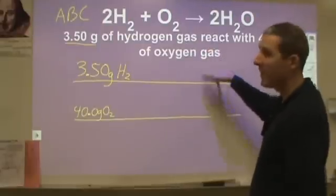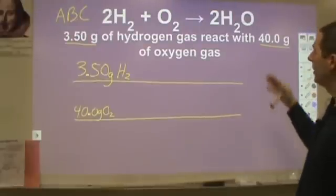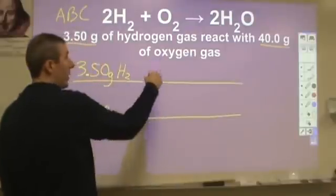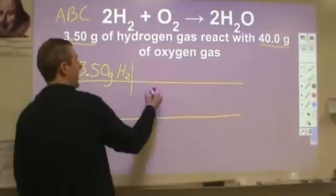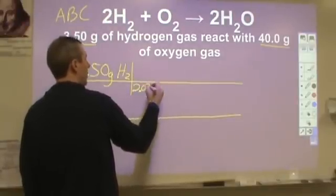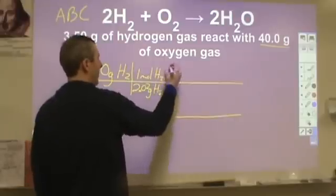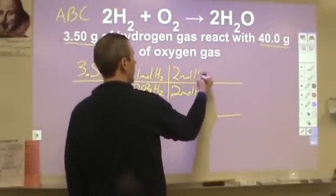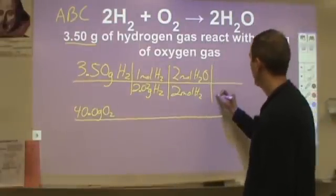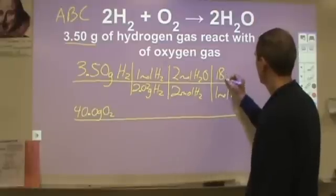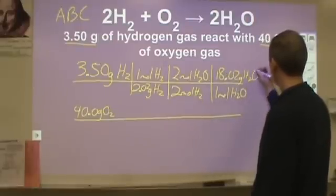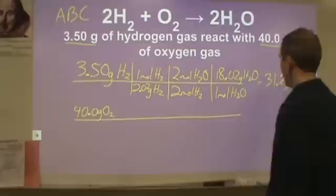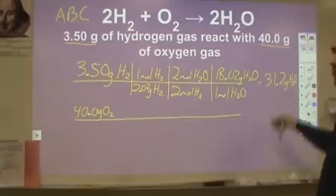If there were multiple products, I'd read the question and use whichever one it asks about, or just pick whichever looks easiest. Here I have no option — I'm going to go to water. So I'll do two stoichiometry problems. I'll take my 3.50 grams of hydrogen, convert that into moles of hydrogen, then use the ratio of two moles H₂ to two moles H₂O from the balanced equation, and convert the water into grams using two decimal places for molar masses. That gives a final answer of 31.2 grams of water from 3.50 grams of hydrogen.